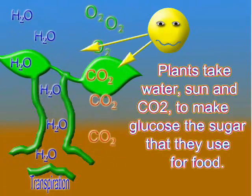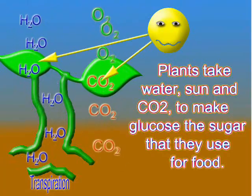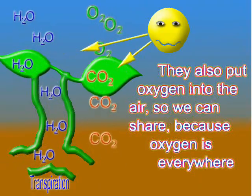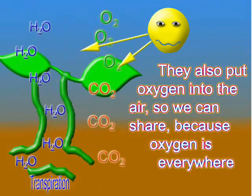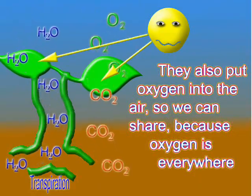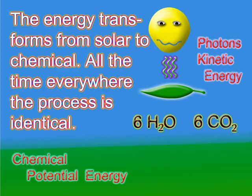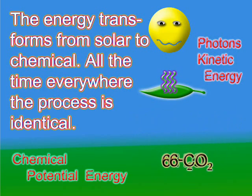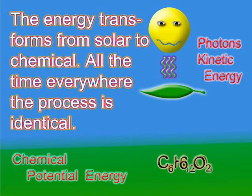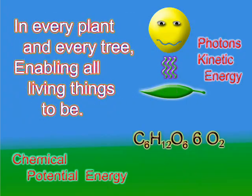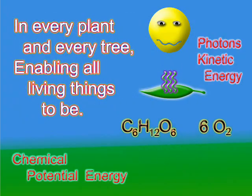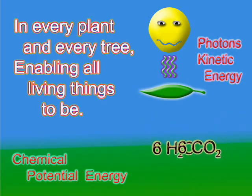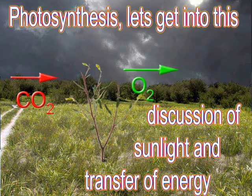Plants take water, sun, and CO2 to make glucose, the sugar that they use for food. They also put oxygen into the air so we can breathe, because oxygen is everywhere. The energy transforms from solar to chemical, all the time, everywhere. The process is identical in every plant and every tree, enabling all living things through photosynthesis.